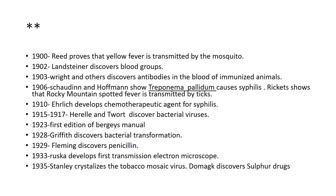In 1900, Reed proves that yellow fever is transmitted by the mosquito. In 1902, Landsteiner discovers blood groups. In 1903, Wright and others discover antibodies in the blood of immunized animals. In 1906, Schaudinn and Hoffmann show that Treponema pallidum causes syphilis, and Ricketts shows that Rocky Mountain spotted fever is transmitted by ticks. In 1910, Ehrlich develops a chemotherapy agent for syphilis. Between 1915 and 1917, Twort and d'Hérelle discover bacteriophages.